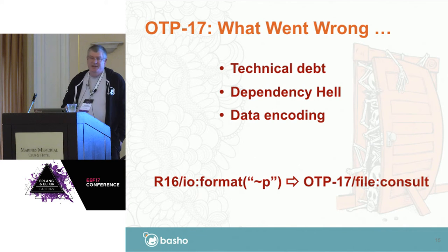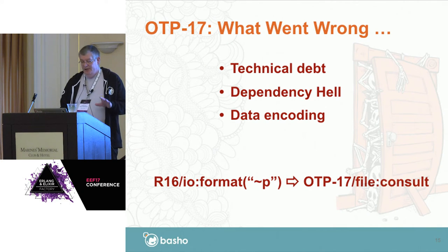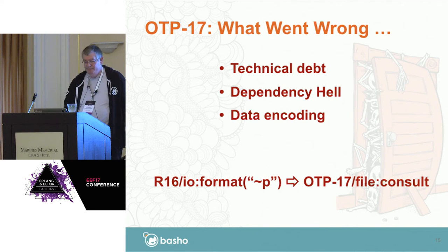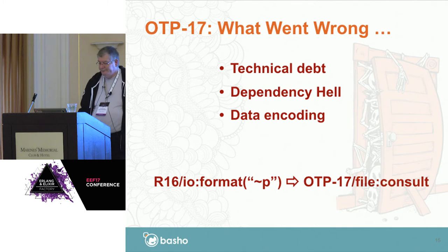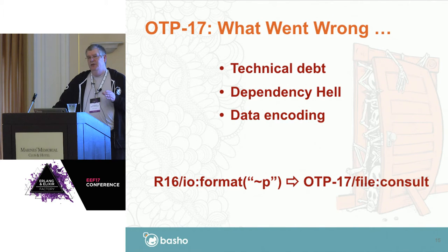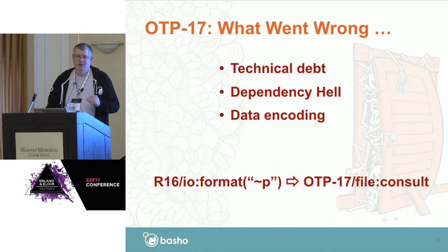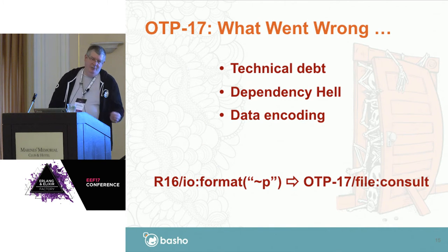Now mind you, that was only for OTP 17, and moving forward to 18, 19, and 20 there's a lot more that comes up. Dependency hell — it's really hard to manage dependencies in a large graph of interdependent repositories. And data encoding — this was one we didn't see coming at all and caused us a lot of pain. In R16 the default encoding was Latin-1, and in OTP 17 the default encoding changed to UTF-8. If you wrote terms using the IO library's P format specifier in Latin-1, it could potentially put characters in the output file that when read back in UTF-8 default would blow up the parser and take down the process doing the reading.